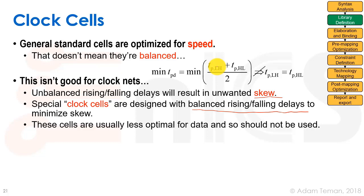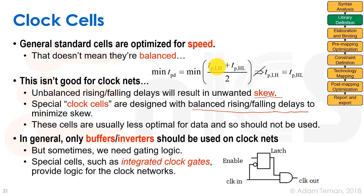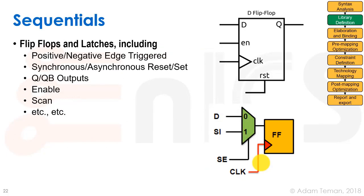You generally don't want to use clock cells during standard logic synthesis since they're not optimized for speed. With so many cells in the library, it's best not to confuse the synthesizer with cells we don't want used in general logic. We want to use only buffers and inverters on clock nets — though sometimes special gating logic like clock multiplexers is needed. Integrated clock gate cells are a special case provided as clock cells in the library and are optimized for balance.